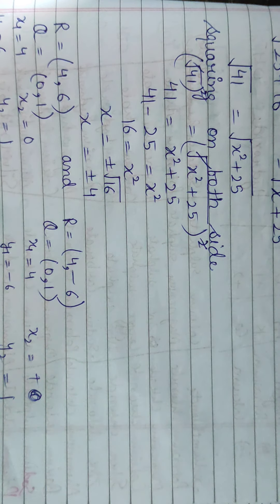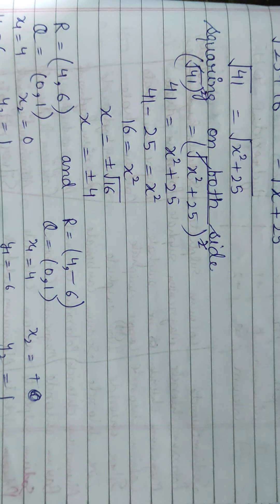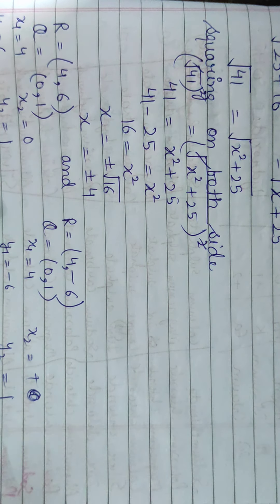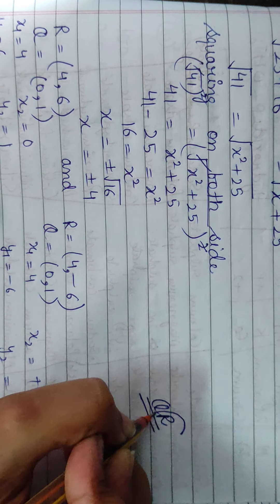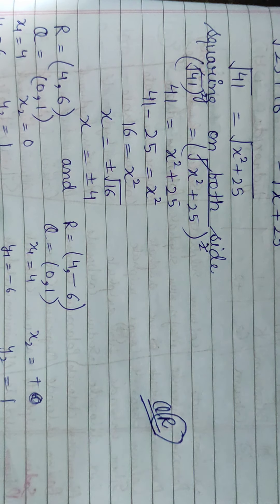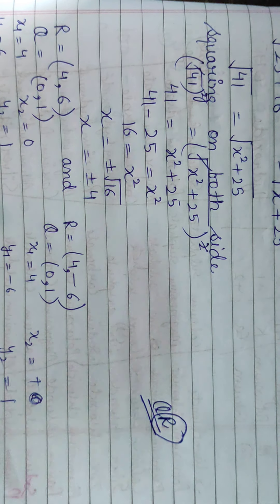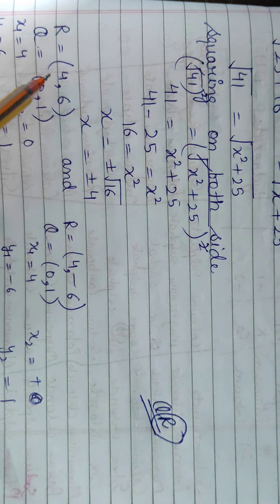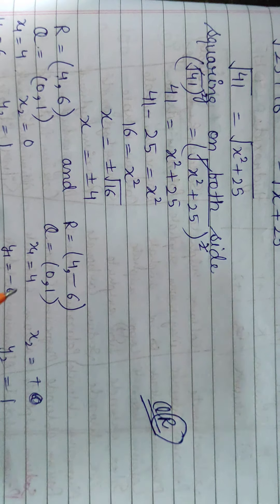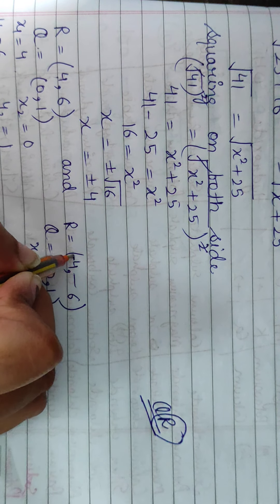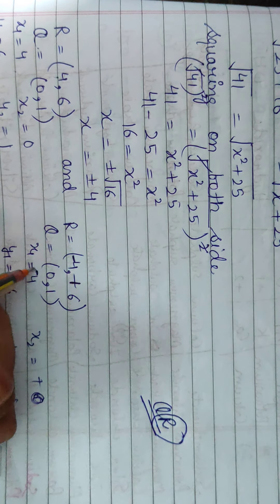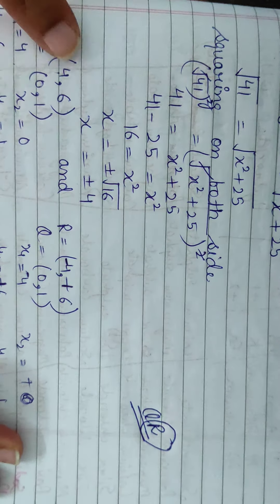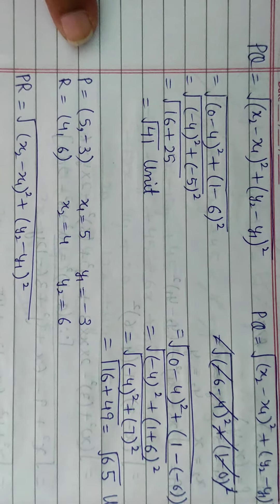x squared equals 16, and taking the square root gives plus or minus sign, so x = ±4. The two values of x are +4 and -4. When x = +4, R is (4, 6), and when x = -4, R is (-4, 6).